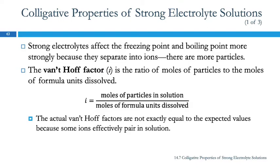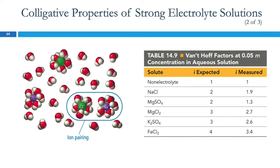The Van't Hoff factor is the ratio of moles of particles in the solution, generally ions, divided by moles of formula units dissolved. We can predict what the Van't Hoff factor should be by looking at the chemical formula, but the actual Van't Hoff factors are always a little bit less than expected because some of the ions pair up even in solution.